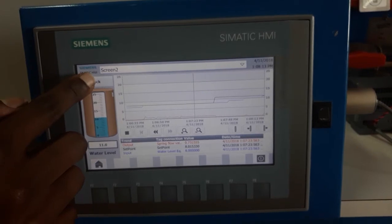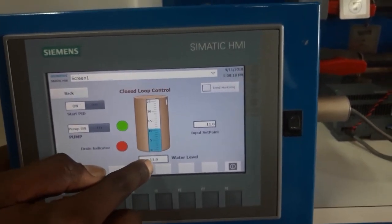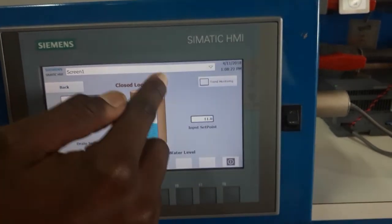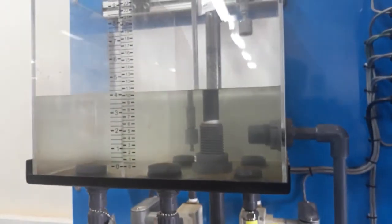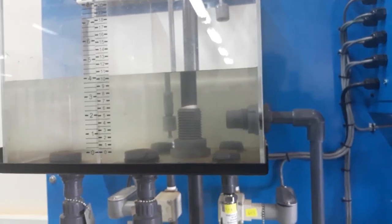Then going back to our system, you can see that our system is at 11. The water level is at 11, and the setpoint is at 11. You can see here, it is at 10 point something, which is still the same steady state error which I was talking about.